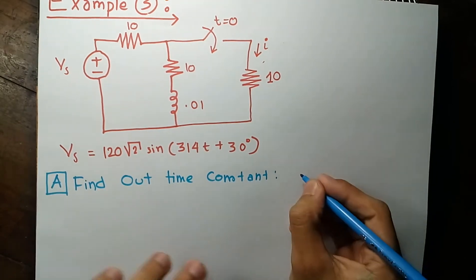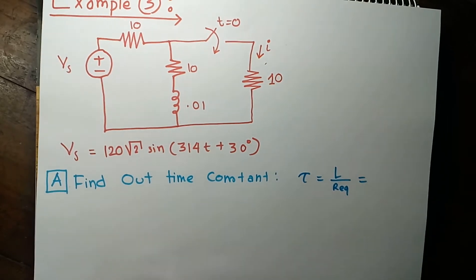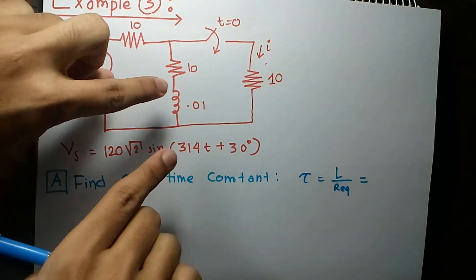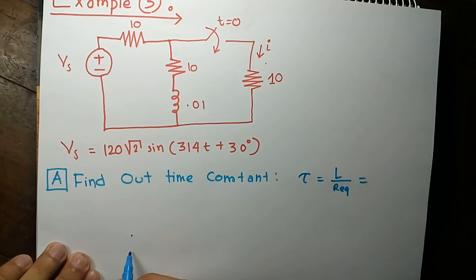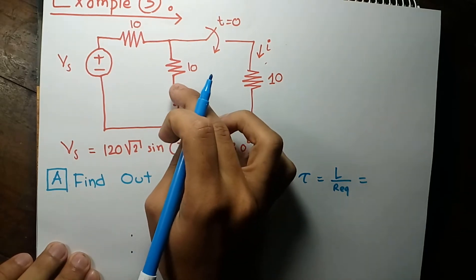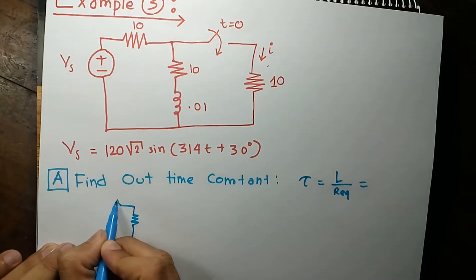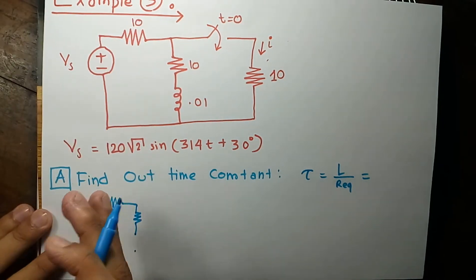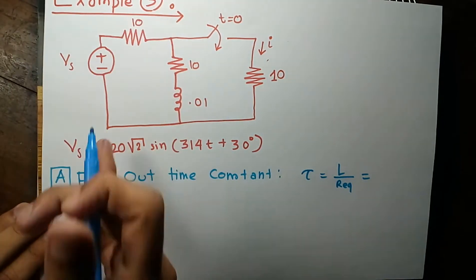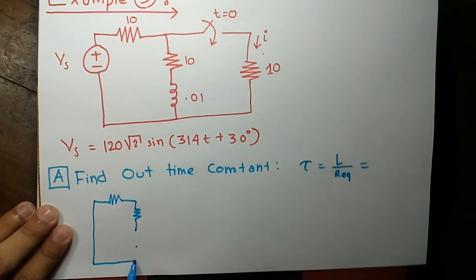The first working rule is to find out the time constant, and the time constant will be L over R equivalent. Now what will be R equivalent? The definition of R equivalent is the equivalent resistance seen from the inductor terminal. To find that, I will look at the terminal — there is a 10 ohm resistance here and 10 ohm resistance here. When measuring equivalent resistance, we short out all the sources, so this voltage source is zeroed out, meaning this portion is shorted.